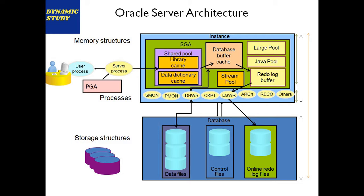Data dictionary cache contains the metadata information of the database — like basic table information for data we store in tables. Database buffer cache is where the actual data lives when we insert, update, or select data from the database server. Data comes from physical storage on the hard disk to RAM, and what we see or update is always available in the database buffer cache.